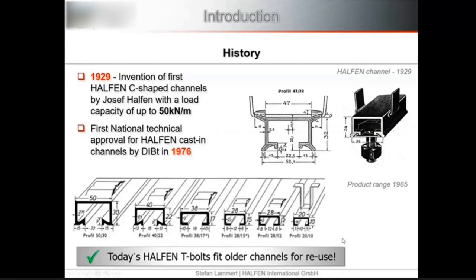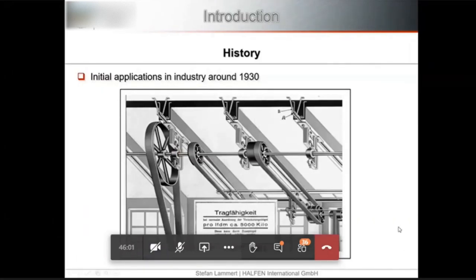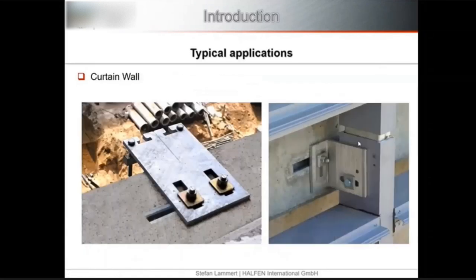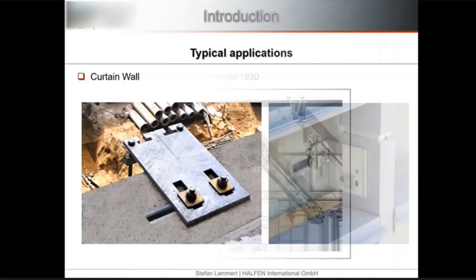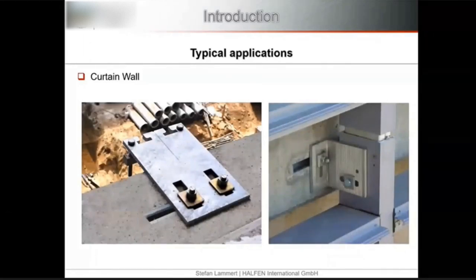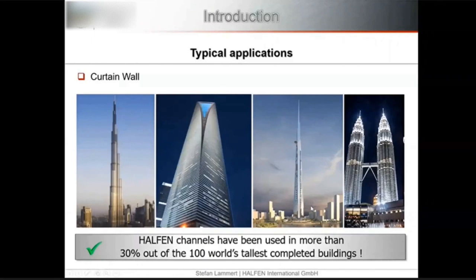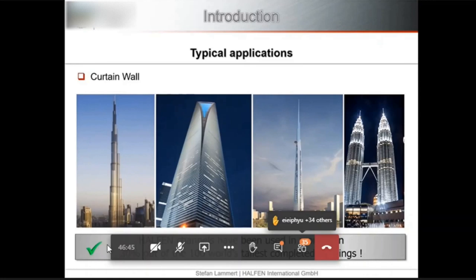A 1965 selection of anchor channel profiles — including geometries like 50-30 and 40-22 — shows that similar profiles were already in use at that time. This demonstrates a big advantage: those channels can even today be retrofitted with new Halfen T-bolts that still fit into the old channel profiles. Today, about 30% of the 100 highest skyscrapers completed worldwide have applied the Halfen cast-in channel system.